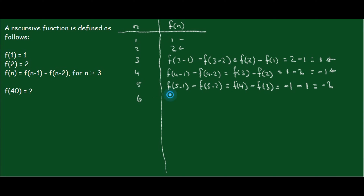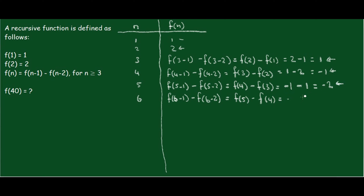Let's do f(6). f(6-1) minus f(6-2) gives us f(5) minus f(4). f(5) is negative 2, minus f(4) which is negative 1. So that's negative 2 plus 1, which gives us negative 1. So f(6) = negative 1.